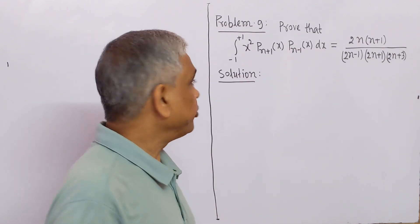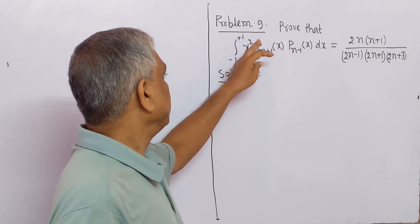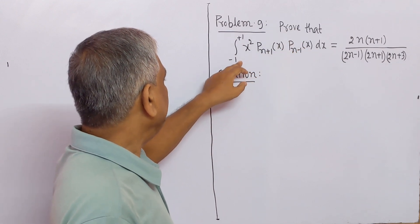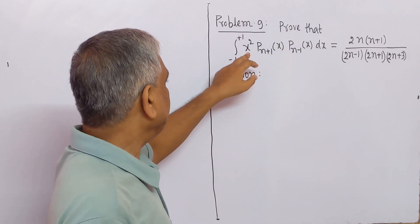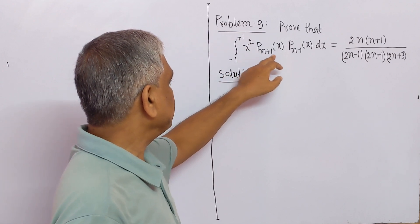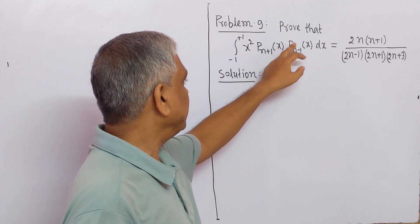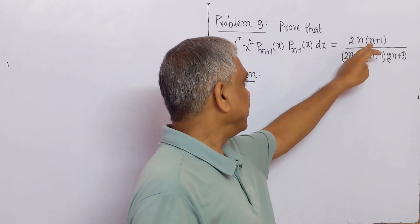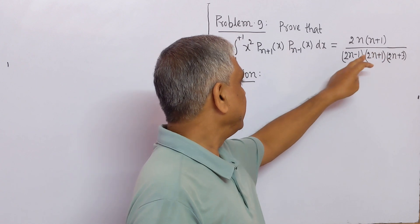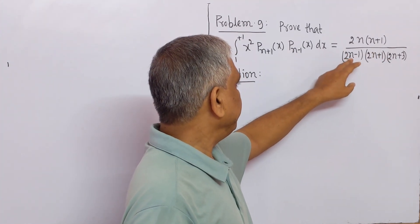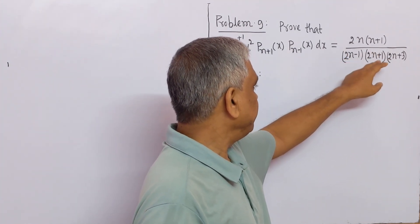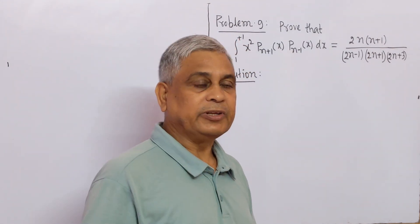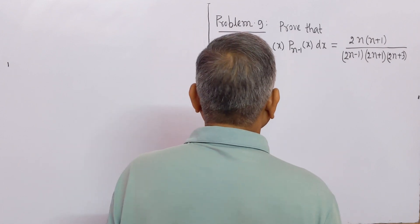Now we solve problem number 9. Prove that the integral from minus 1 to plus 1 of x squared times P_(n+1)(x) times P_(n-1)(x) dx equals 2n(n+1) divided by (2n-1)(2n+1)(2n+3).